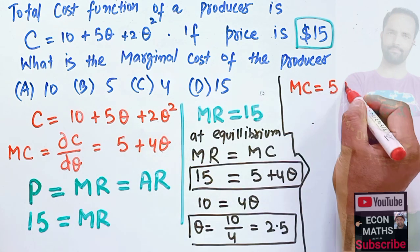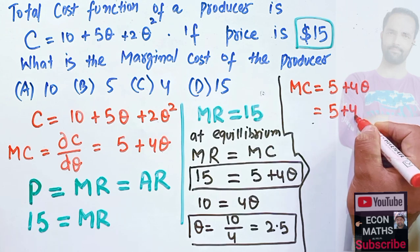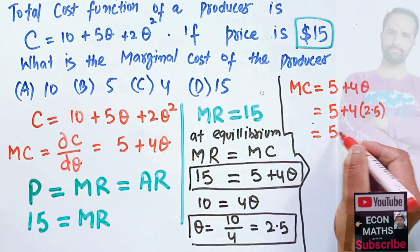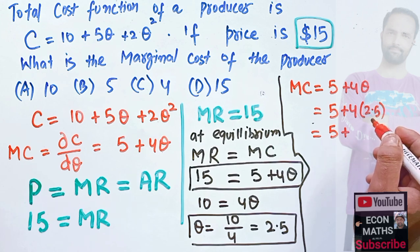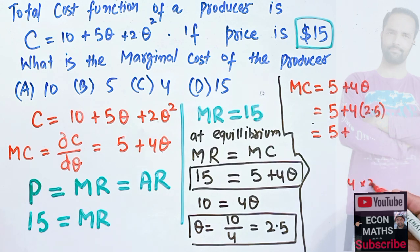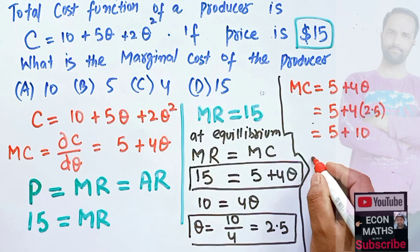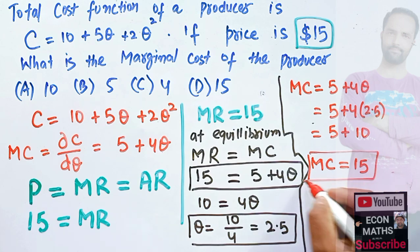Now we calculate the marginal cost by plugging the equilibrium quantity into the marginal cost function: MC = 5 + 4Q. Substituting Q = 2.5: MC = 5 + 4(2.5) = 5 + 10 = 15. So the marginal cost for the producer comes out to be 15.